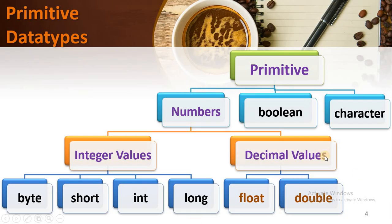This is the hierarchy of data types in Java. In the last video, we started our discussion about numbers and covered how to store integer values with the help of byte, short, int, and long. Now in this video, we are going to cover how to store decimal values using float and double data types.